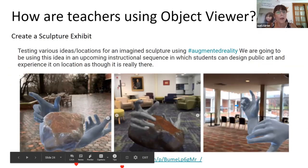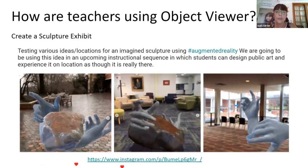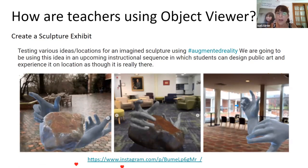Another way that Object Viewer is being used is in the art world. Here are examples of a sculpture exhibit being created — testing different ideas, seeing how sculptures would look if built. This is similar to how real estate agents are starting to use augmented reality, by putting furniture into an empty house so that when you look at it, it actually looks like it's really there.